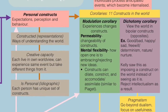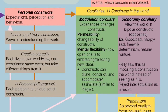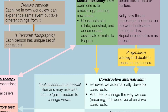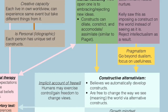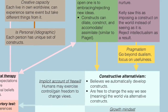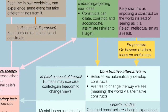Words like 'corollary' were known as Kellyisms because George Kelly simply made up words to characterize things that didn't really have a name. Another made-up term is constructive alternativism, in which Kelly believed that we automatically developed constructs and that we were free to change the way we saw meaning or the world via these alternative constructs. He believed in pure pragmatism as a way to go beyond dualistic notions and focus on the usefulness of a certain construct.